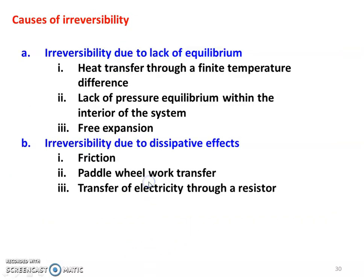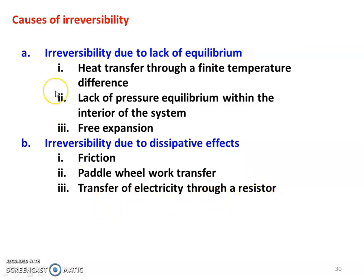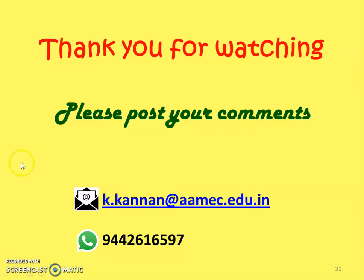The causes of irreversibility are: irreversibility due to lack of equilibrium — including heat transfer through a finite temperature difference, lack of pressure equilibrium within the interior of the system, and free expansion — and irreversibility due to dissipative effects, including friction, paddle wheel work transfer, and transfer of electricity through a resistor. In the next lecture, we will discuss all the causes in detail. Thank you for watching. We will meet again in the next lecture to discuss the Second Law of Thermodynamics.